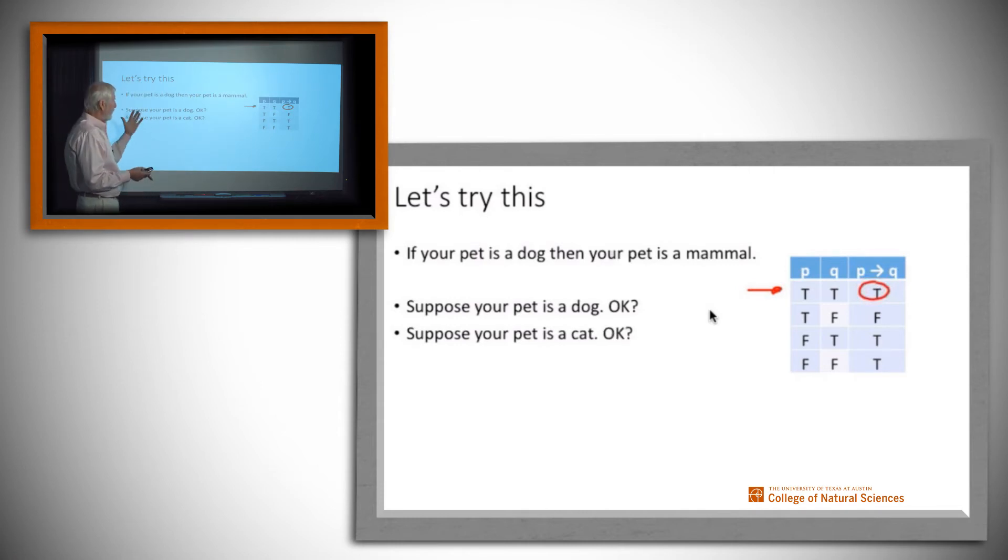How about this one though? Suppose your pet is a cat. Do I still believe that this implication is true? Well, the fact that your pet is a cat means that it is not a dog, so the antecedent right here is false, yet it happens that a cat is also a mammal. So we are in this situation right here where the antecedent is false yet the consequent is true, and we consider that a true implication as well.